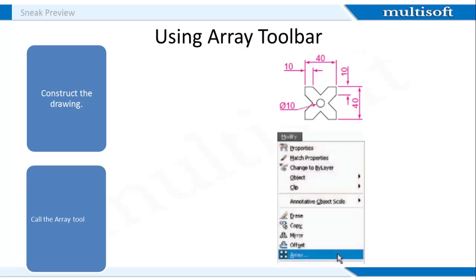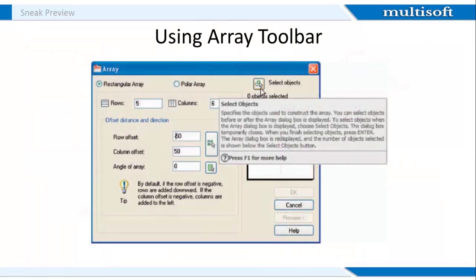The Array dialog box appears. Now make the settings in the dialog box: set on the Rectangular array radio button, in the row field enter 5, in the column field enter 6, and in the row offset field enter minus 50, and in the column offset field enter 50. Then click the select objects button and the dialog box disappears. A second dialog box appears which includes a preview button. Click the preview button. The dialog disappears and the following prompt appears: pick or press escape to return to the drawing, or right click to accept the drawing. If satisfied, right click; if not, press the escape key and make revisions to the Array dialog fields as necessary.